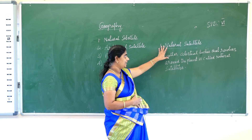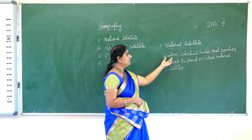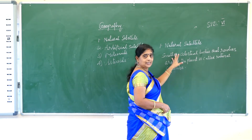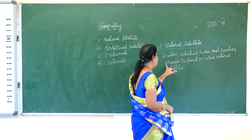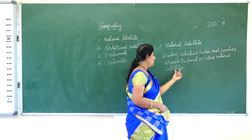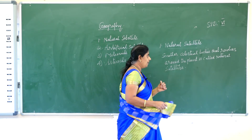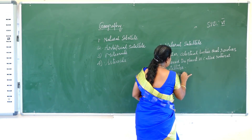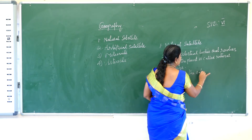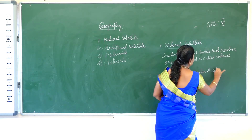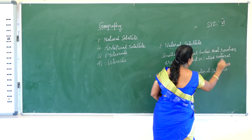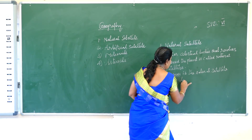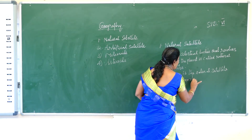What is a natural satellite, children? It is nothing but smaller celestial bodies — like the sun and the moon — that revolve around the planet. These are called natural satellites. For our earth, the moon is the natural satellite. And the moon's diameter is one-fourth of the earth's diameter.